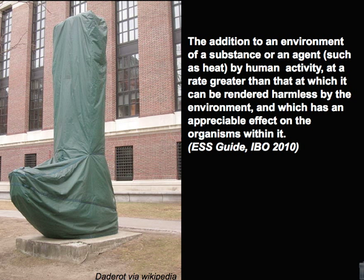We've defined pollution as the addition to an environment of a substance or an agent, such as heat, by human activity, at a rate greater than that at which it can be rendered harmless by the environment, and which has an appreciable effect upon the organisms within it. So going by this definition from our ESS guide, there are three things to consider before we label something as a source of pollution. First of all, it must come from the human environment as a result of human activity.